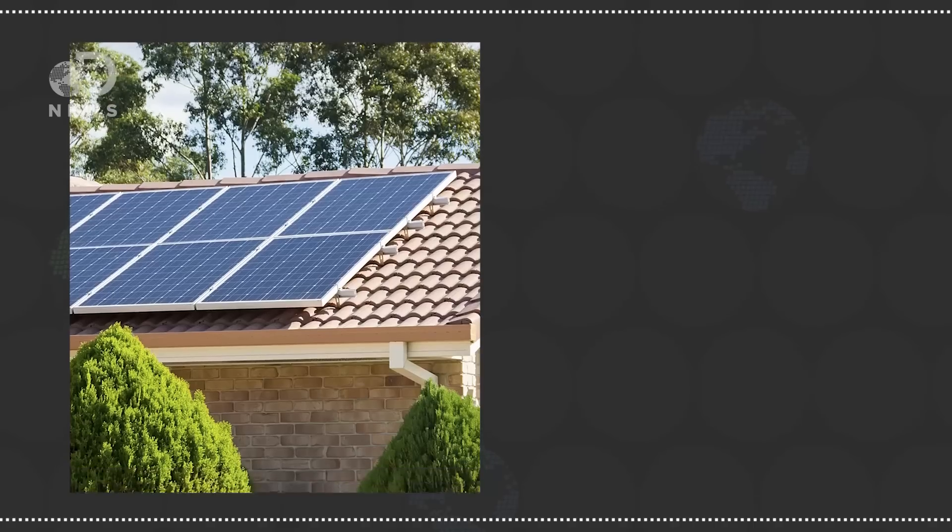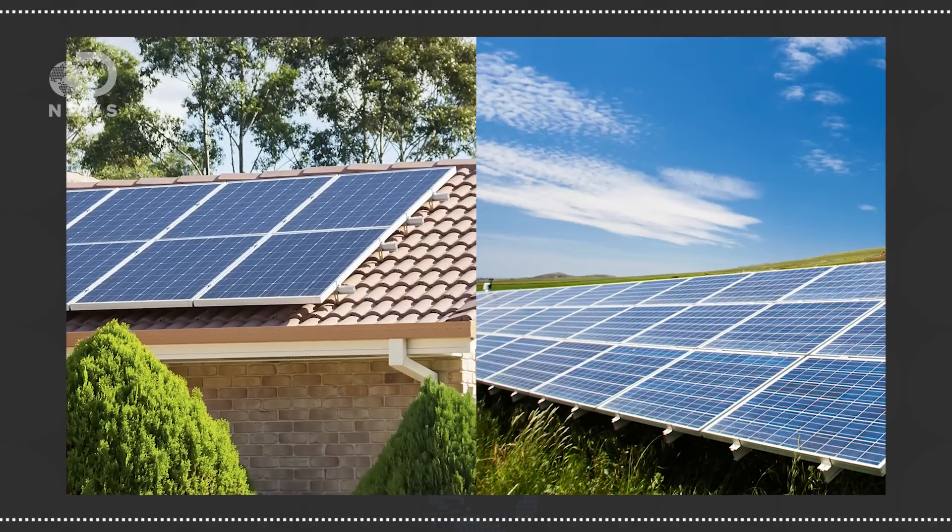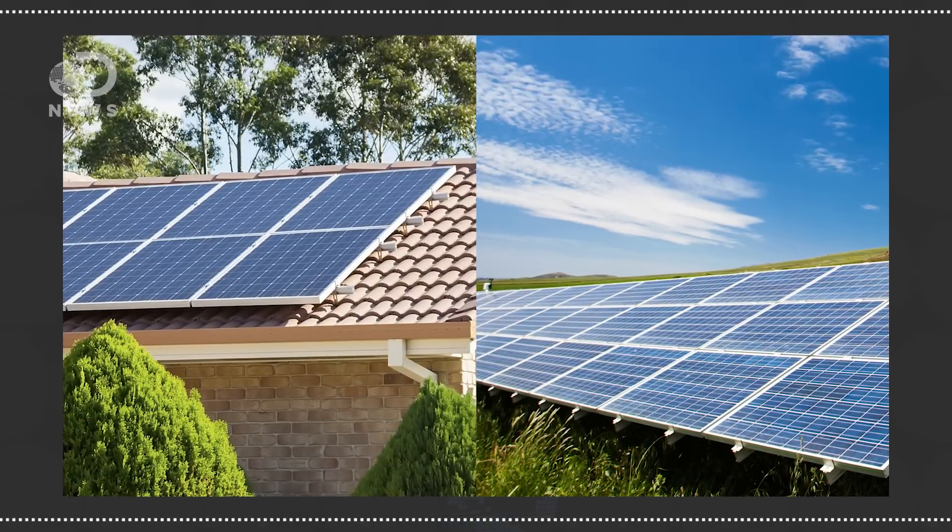Normally, panels are on roofs or in fields, which is because they're opaque. They block the sunlight from going anywhere else, so we may as well put them out of the way.